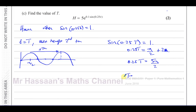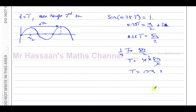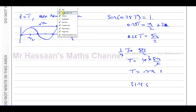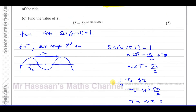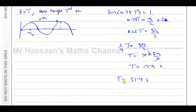Since 0.25T = 5π/2, we have T equals 4 times 5π/2, which equals 10π. Writing this to 3 significant figures — π ≈ 3.142 — gives T equals 31.4 seconds. That completes this question.